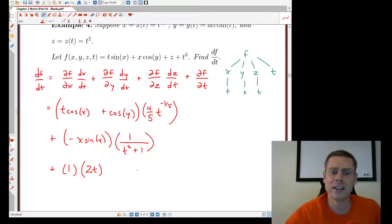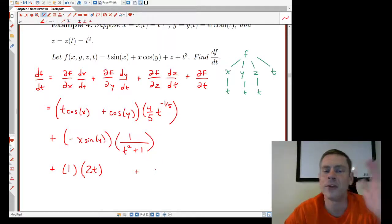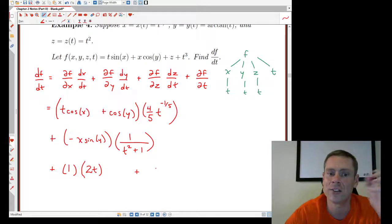And then finally, I want to find the partial of f with respect to t. And you go through, and it looks like we treat the x and the y now as constants. I'm going to get sin x, nothing, nothing, and 3t squared.